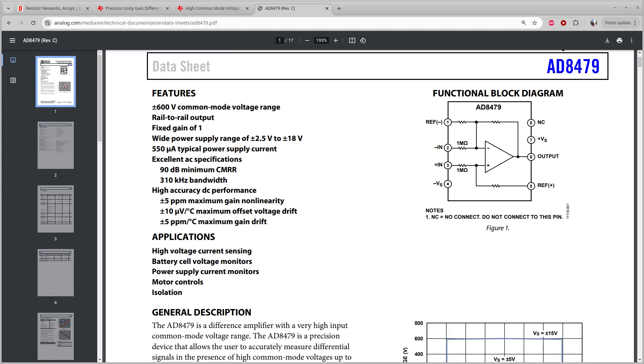By the way, you can get even higher voltage versions of these. The AD8479 has a common mode range of 600 volts and can survive a 10 second over voltage of 900 volts.